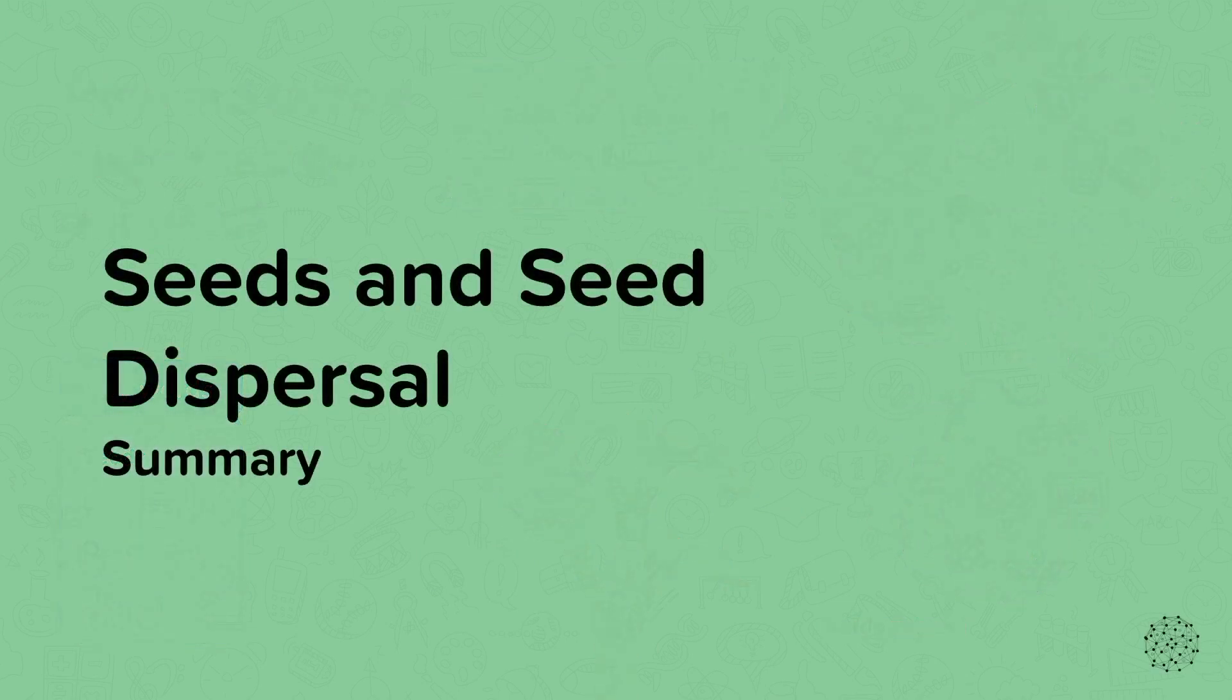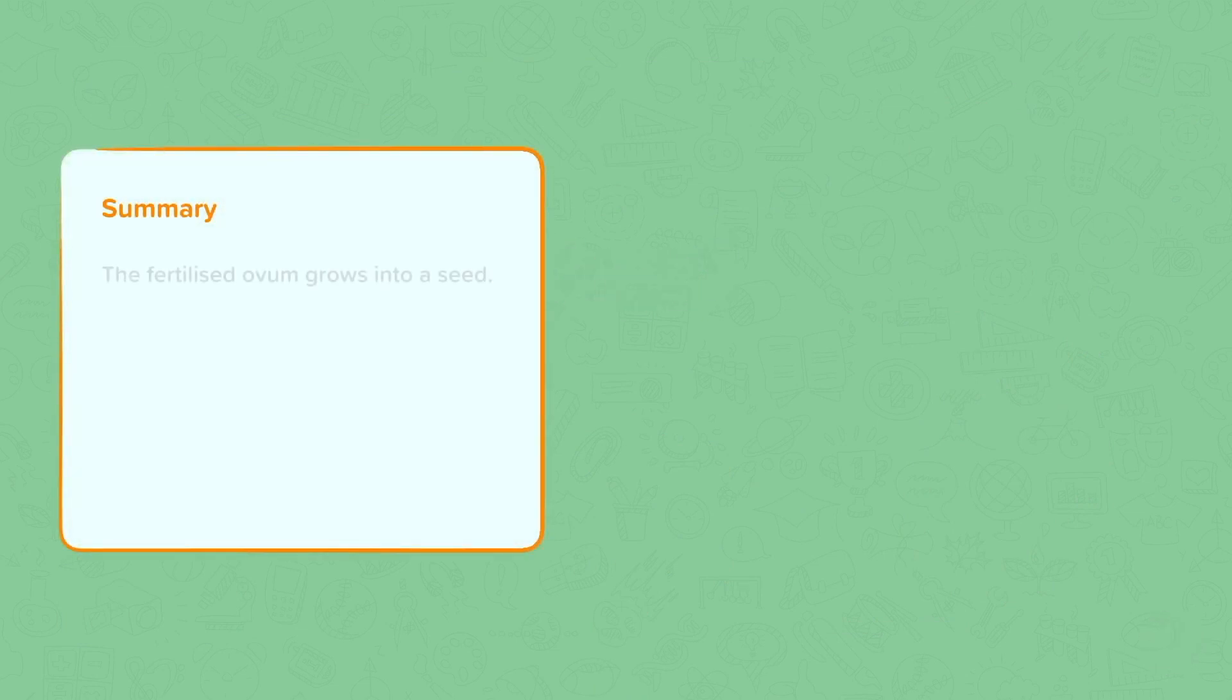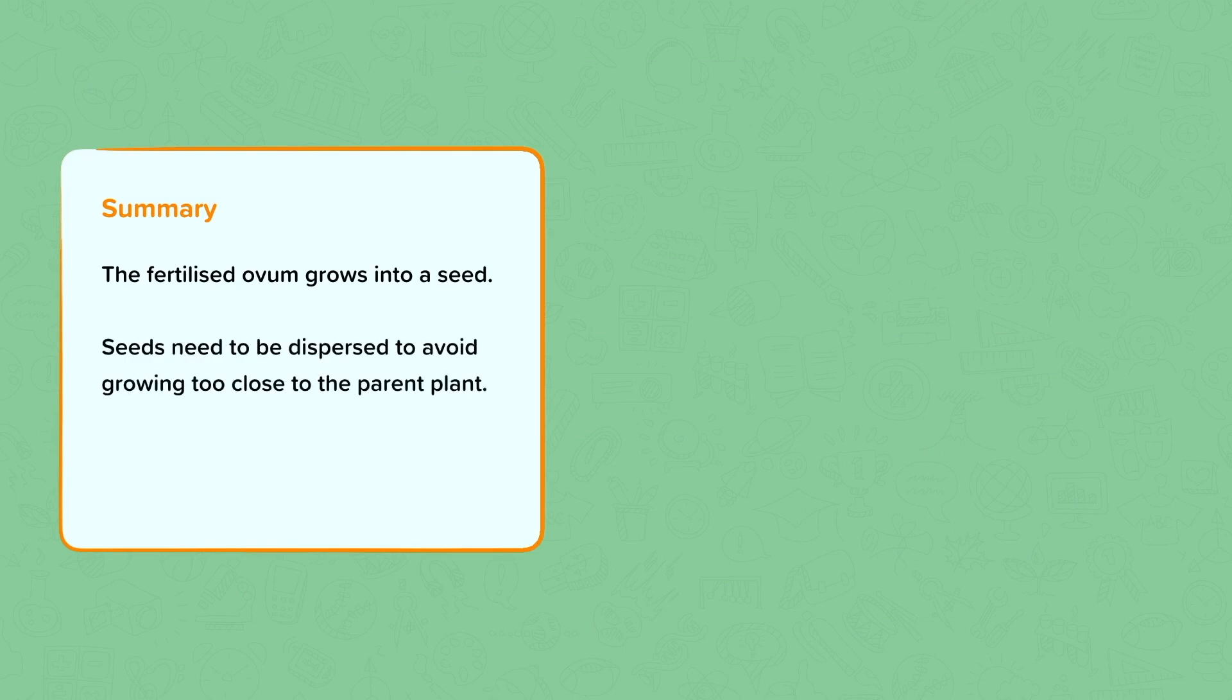Summary. In summary, we can now say that a fertilised ovum will grow into a seed. The seeds then need to be dispersed to avoid growing into a new plant too close to the parent plant. And seeds can be dispersed by wind, water, explosion, and animals.